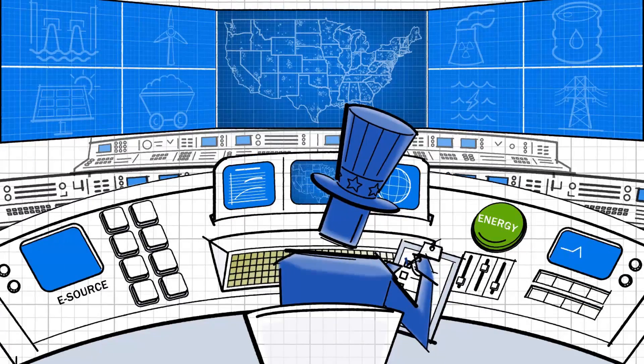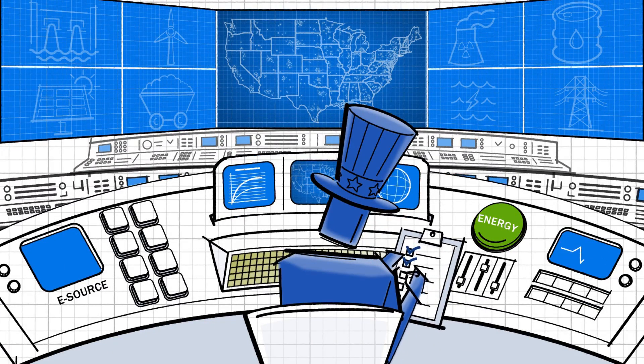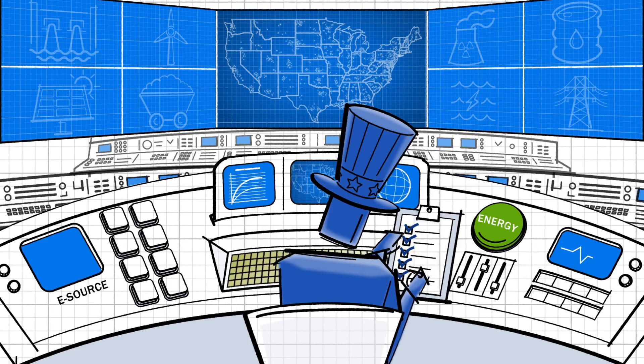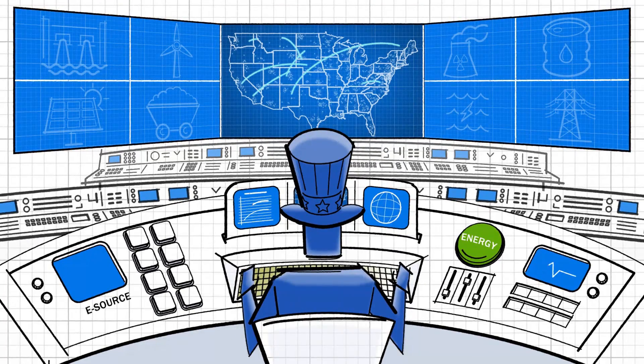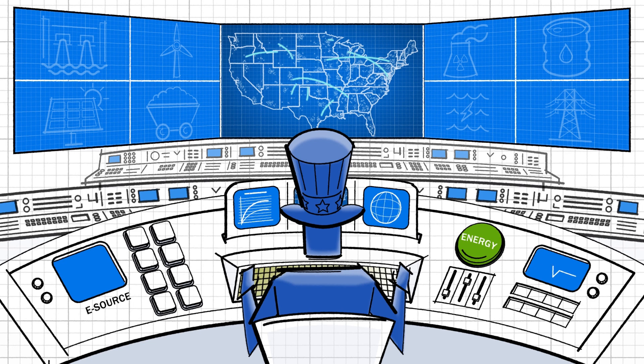Energy independence checks some of these boxes. Energy security checks them all. Energy independence looks inward. It means that if we closed off our borders, we would still have ample energy resources to supply U.S. factories and homes.